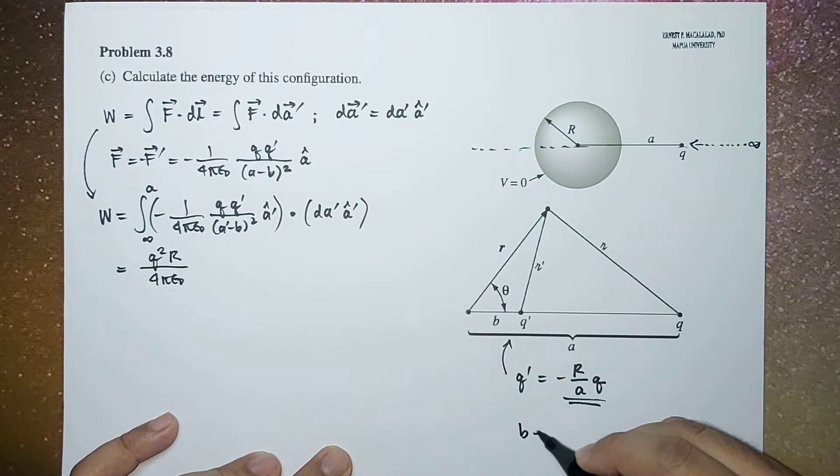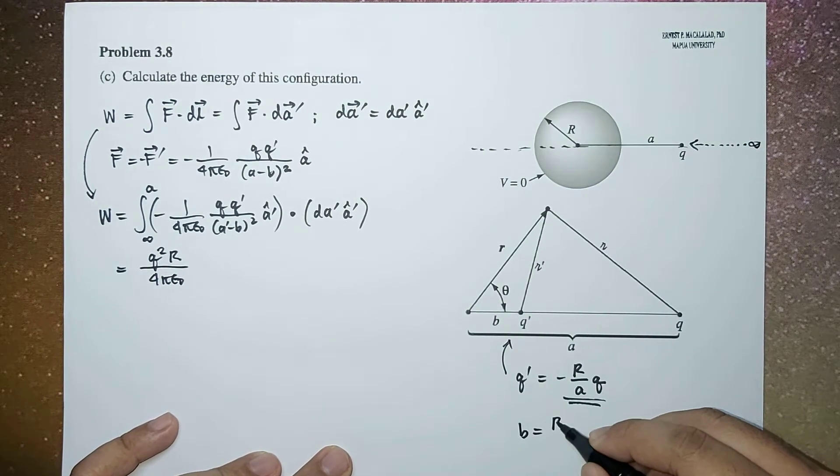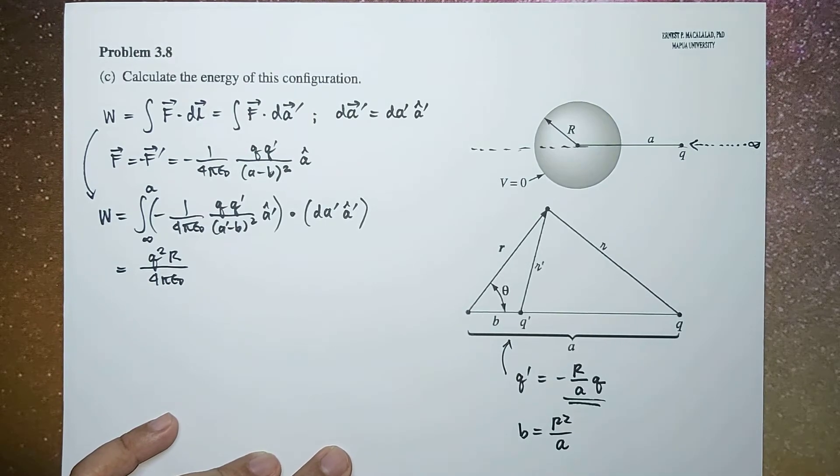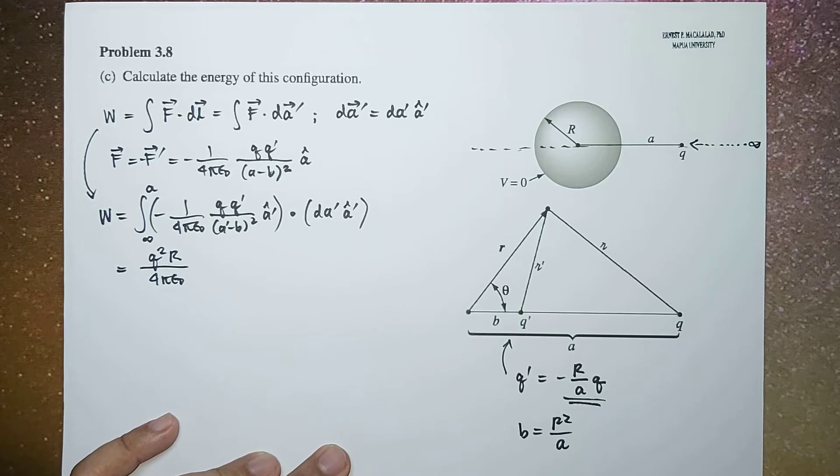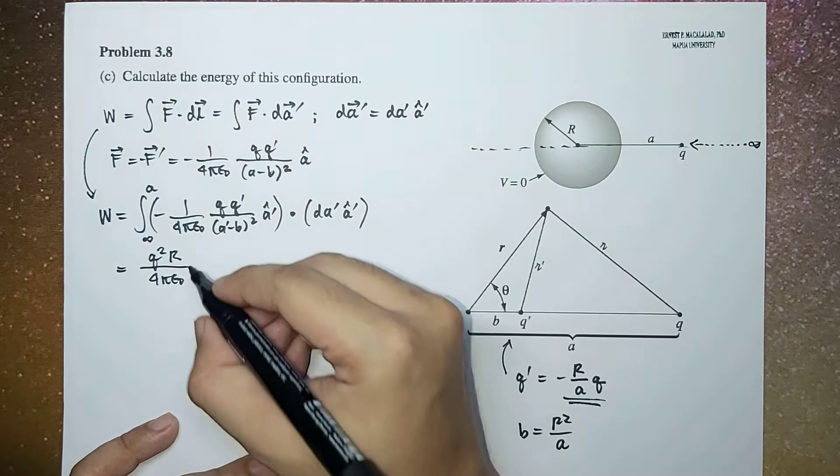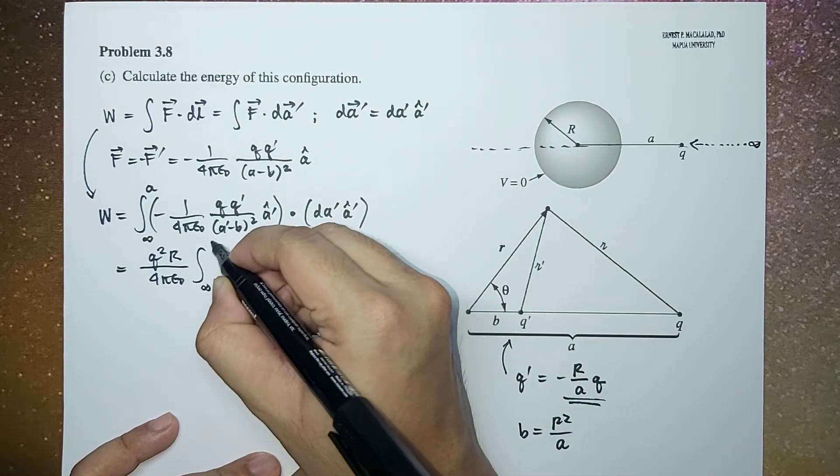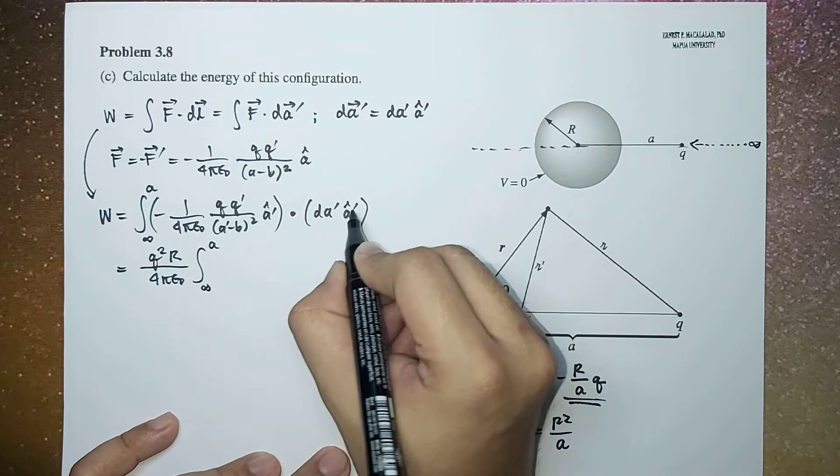And then b is equal to r squared over a from example 3.2. So this integration becomes a prime.